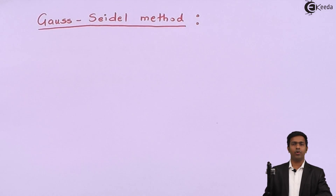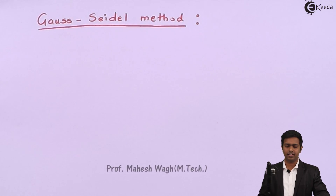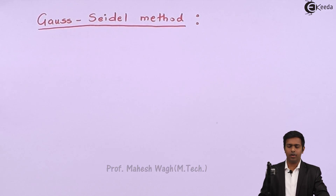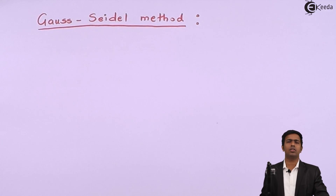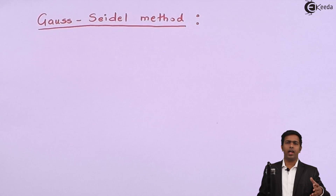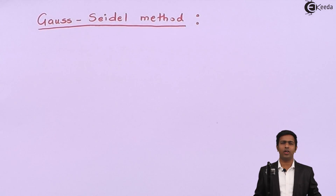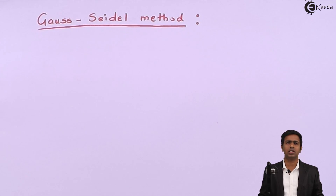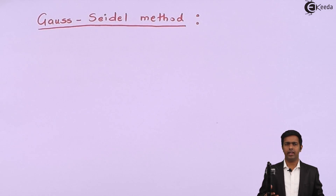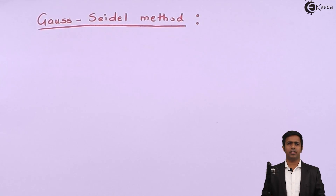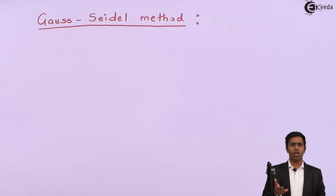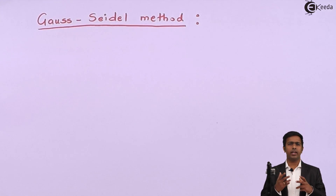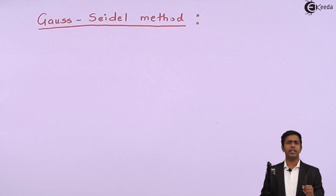Hello friends. In this video we are going to learn a new concept called the Gauss-Seidel method. Whenever we have simultaneous linear equations and we want to find the values of unknowns, we solve them by many methods — Cramer's rule, Gauss elimination, Gauss-Jordan method, and Jacobi's method. Gauss-Seidel is one of these methods used to solve simultaneous equations and find their roots.